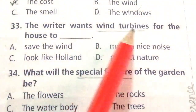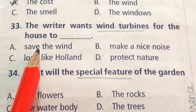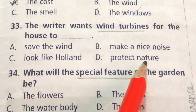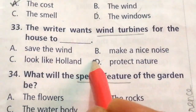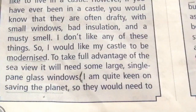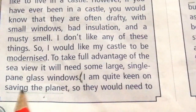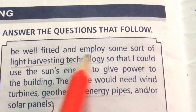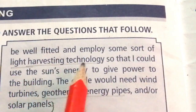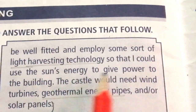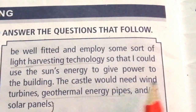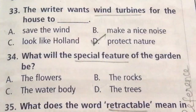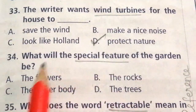Question 33: The writer wants wind turbines for the house to dash. Options: Save the wind, Make a nice noise, Look like Holland, Protect nature. The answer is D: Protect nature. The answer is given in the second paragraph: I am quite keen on saving the planet, so they would need to be well fitted and employ some sort of light harvesting technology so that I could use the sun's energy to power the building. The castle would need wind turbines, geothermal energy pipes, and solar panels.